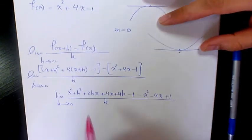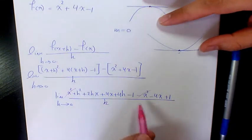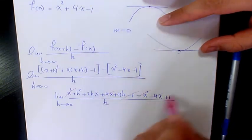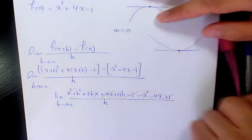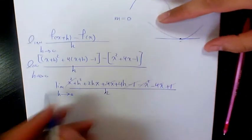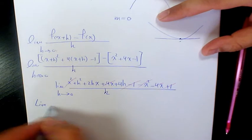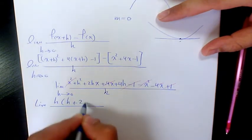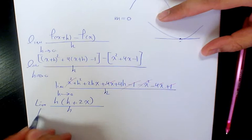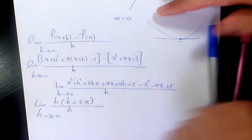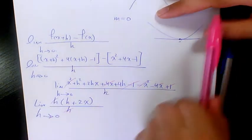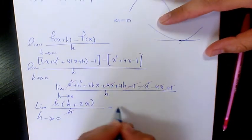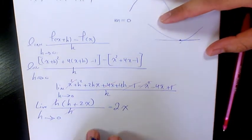Let's simplify it. x² and negative x² cancel out. 4x and negative 4x cancel out. Negative 1 and positive 1 cancel out. And we're going to have only these two terms. When you factor them, h is going to factor out as h(h + 2x) divided by h, when h approaches 0. These two cancel out, and the limit when h approaches 0 is going to be 2x.